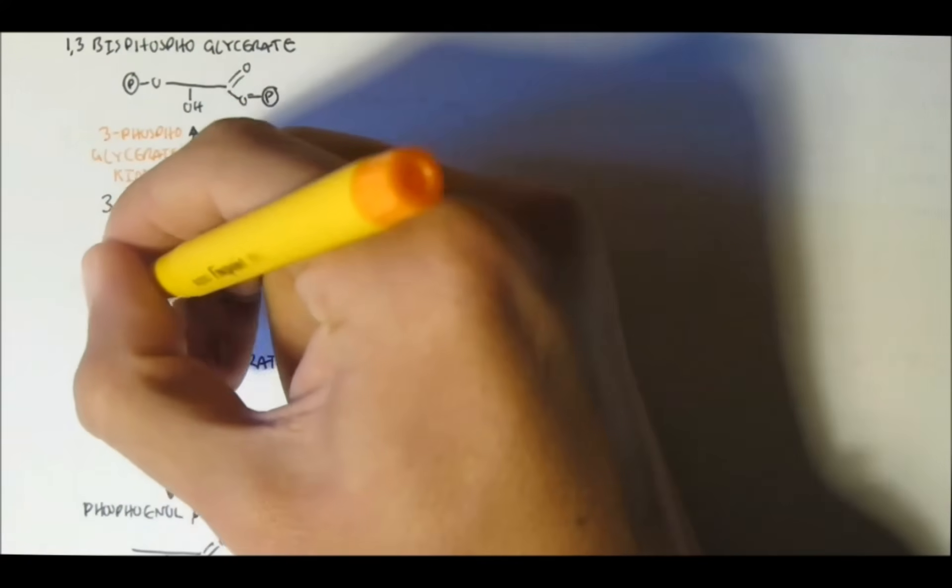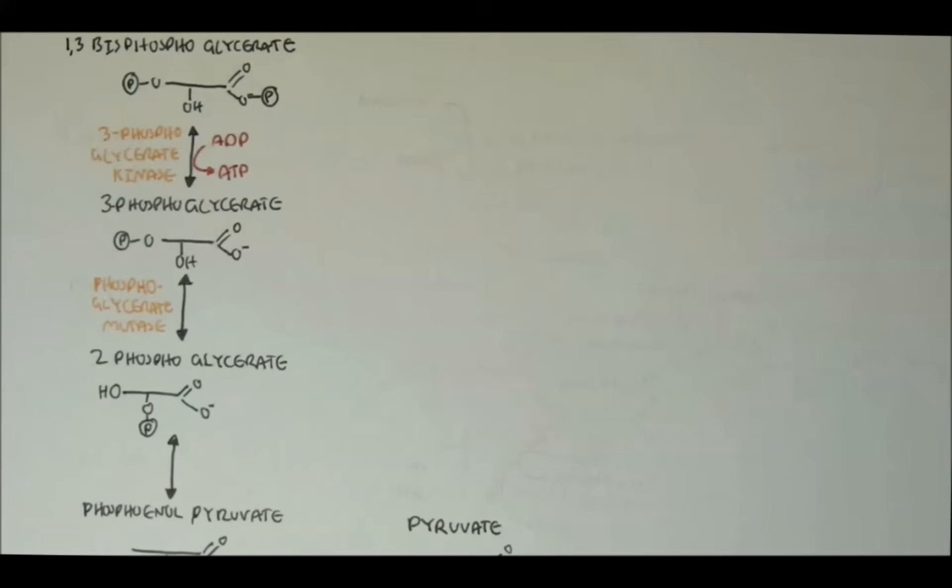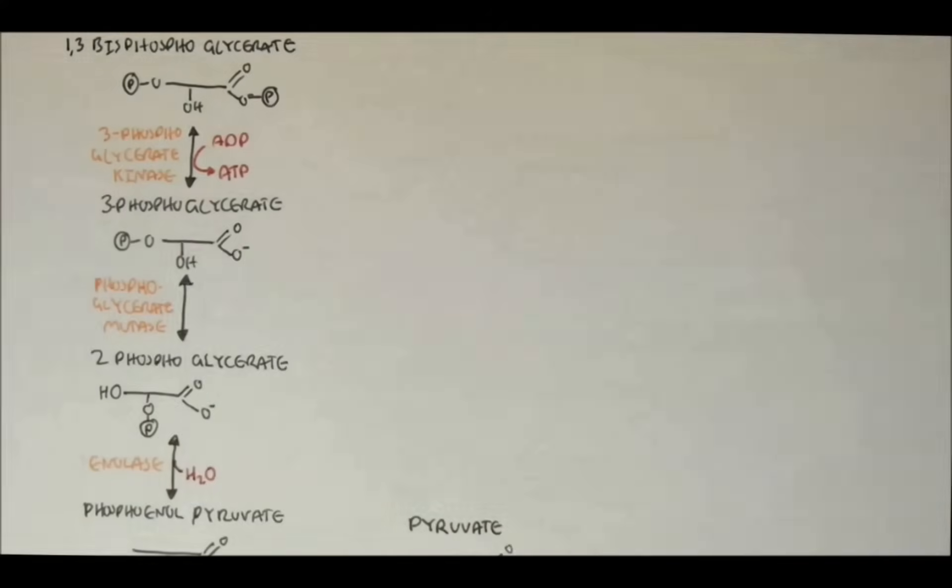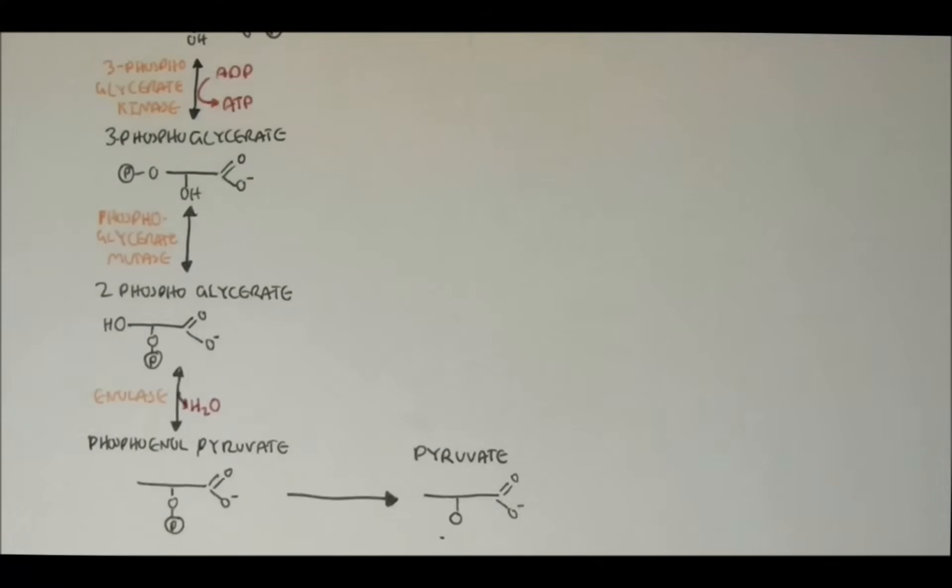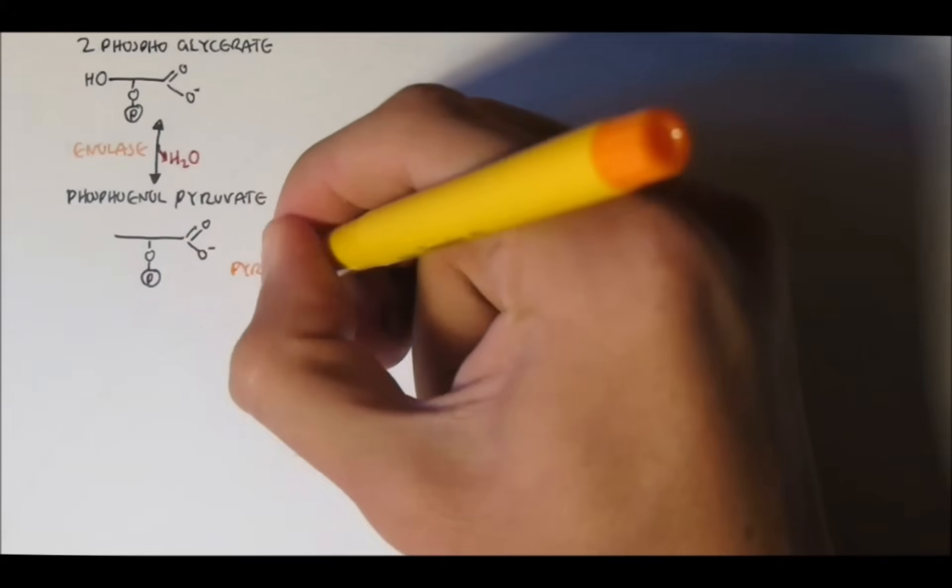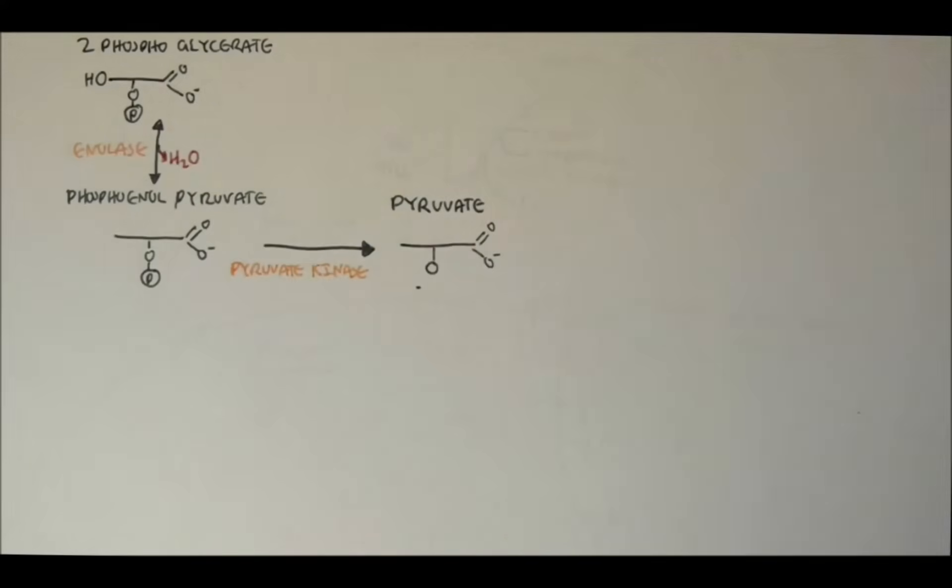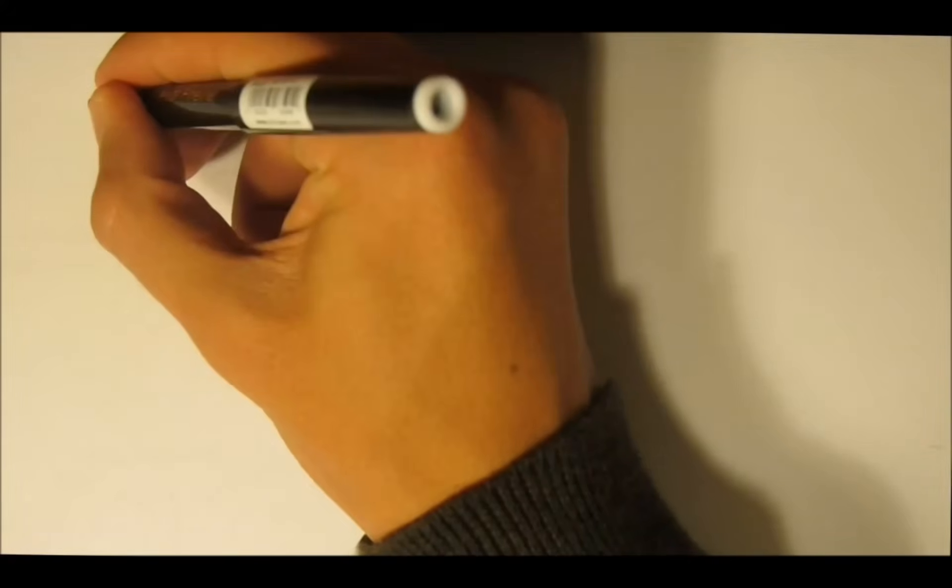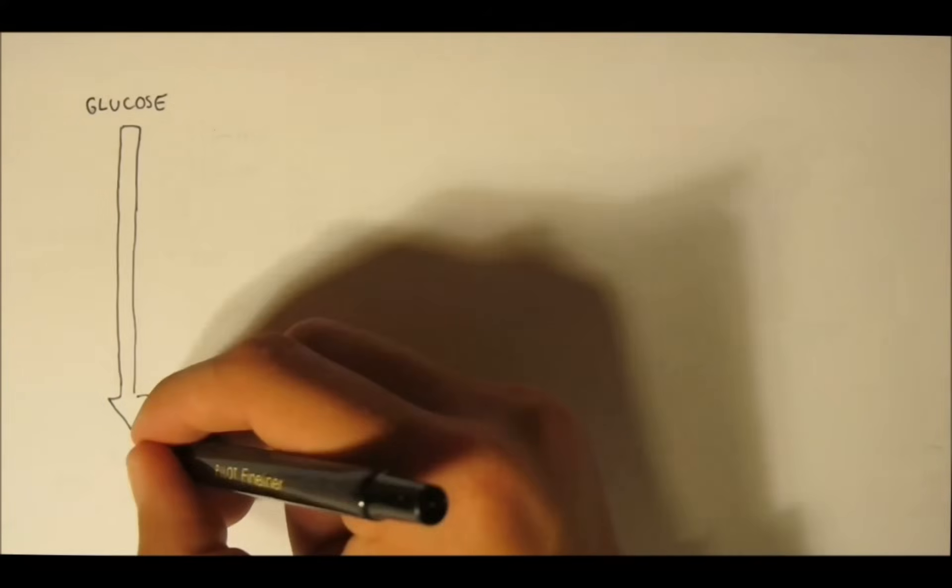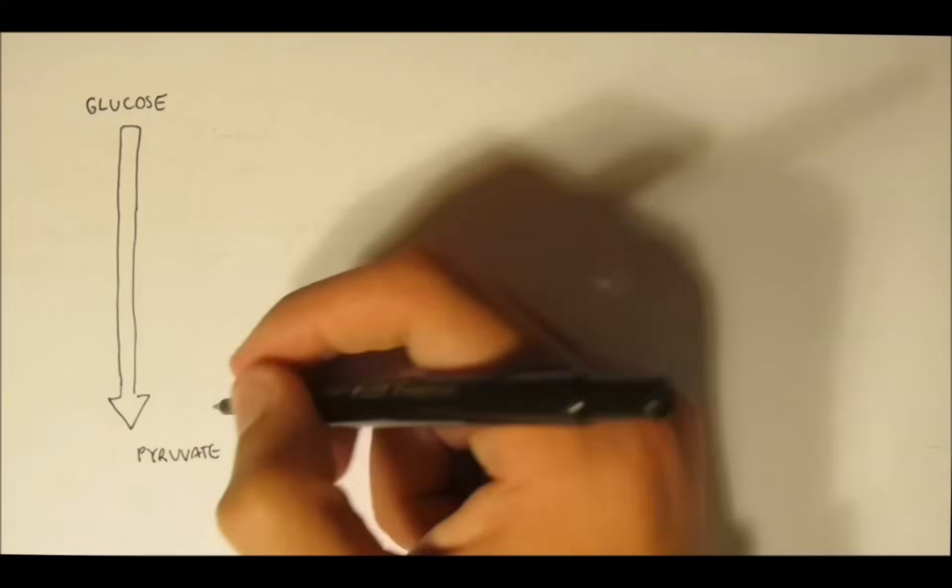3-phosphoglycerate then, with the enzyme phosphoglycerate mutase, will form 2-phosphoglycerate. The phosphate is only in a different location now. It is off the second carbon. 2-phosphoglycerate will dehydrate, remove water, to form phosphoenolpyruvate by the enzyme enolase. And finally, phosphoenolpyruvate will dephosphorylate by the enzyme pyruvate kinase to form pyruvate. The phosphate is transferred to ADP to form ATP. Pyruvate is the final product of glycolysis. From glucose all the way to 2 pyruvate molecules. Pyruvate looks something like this.